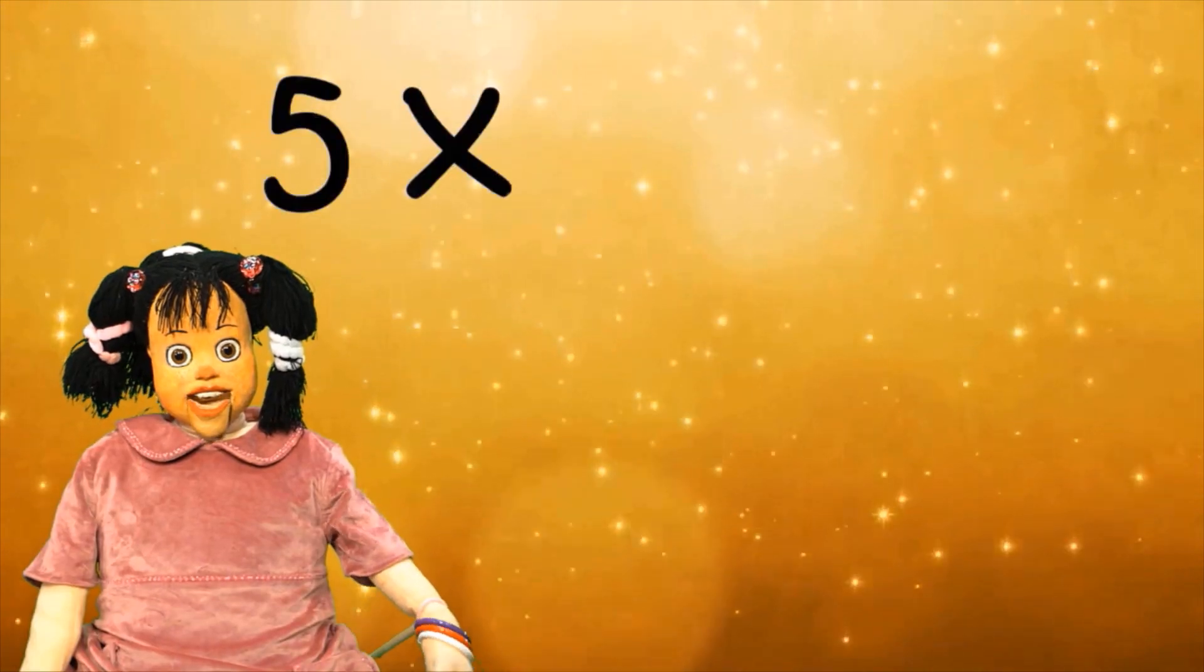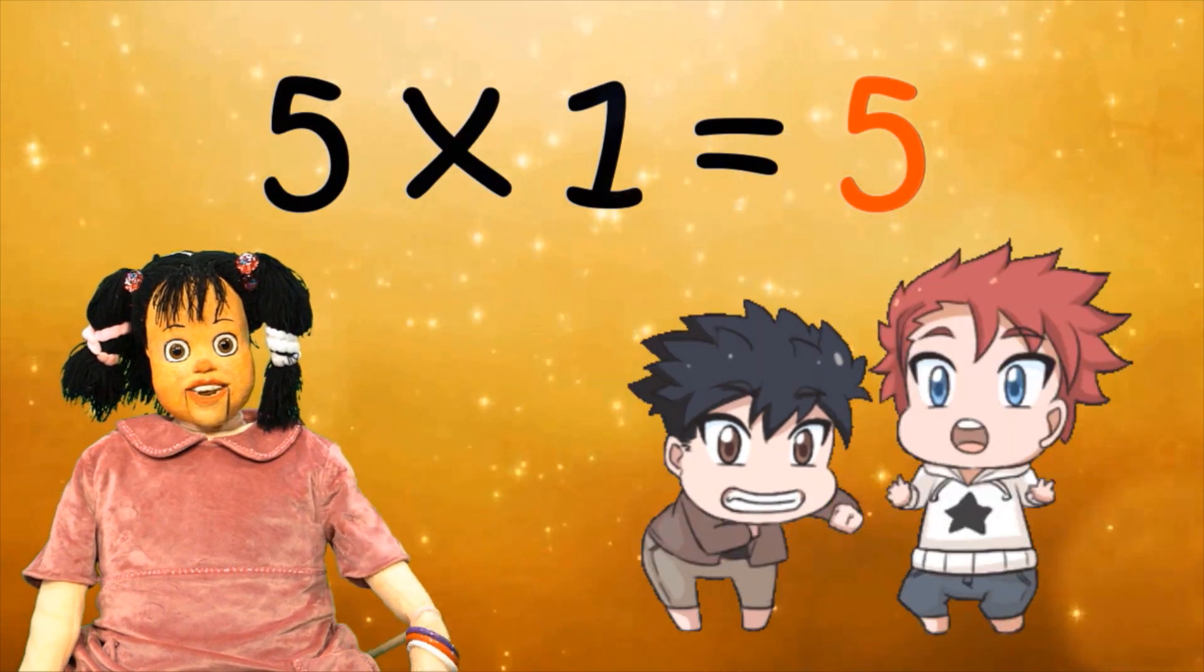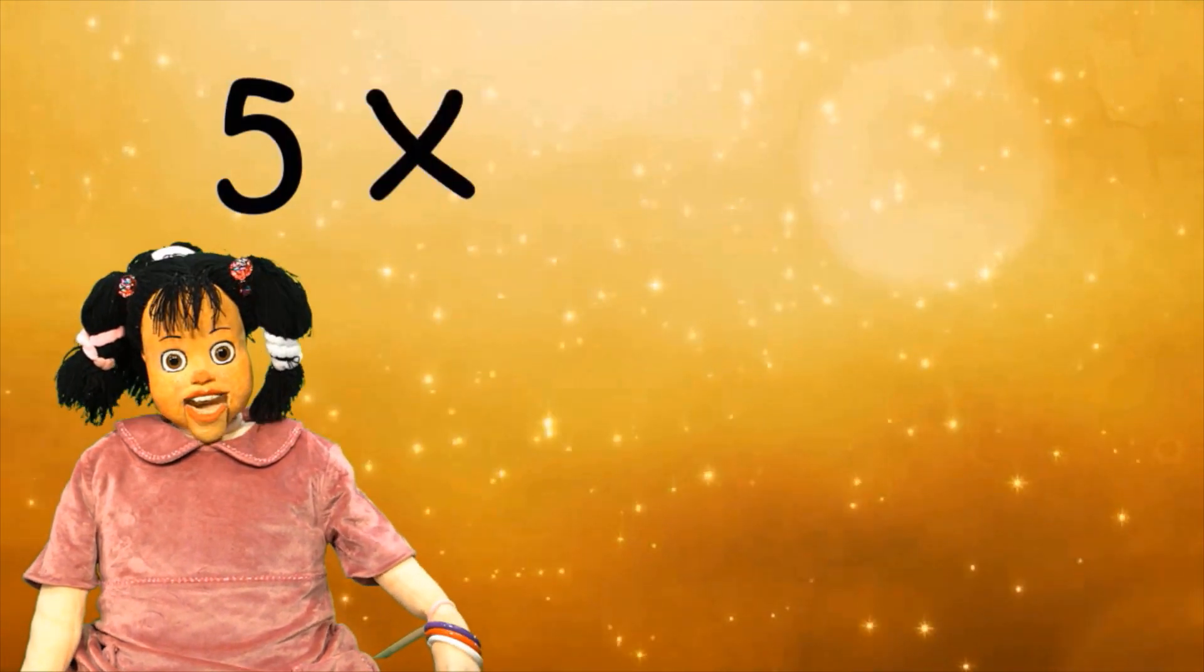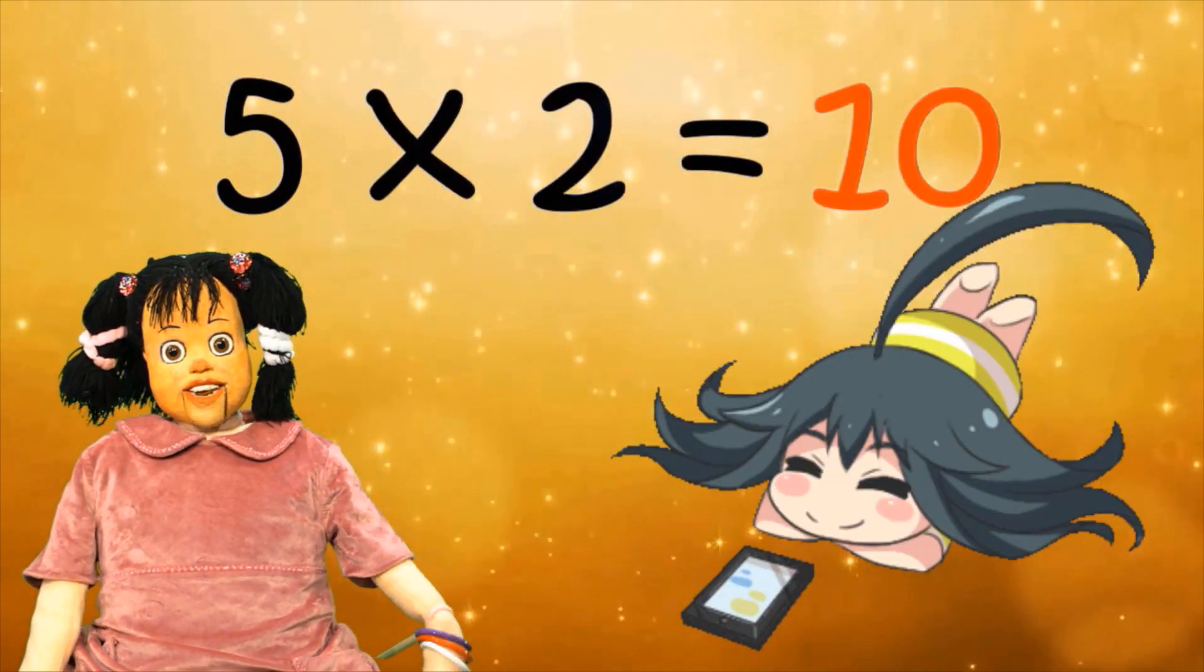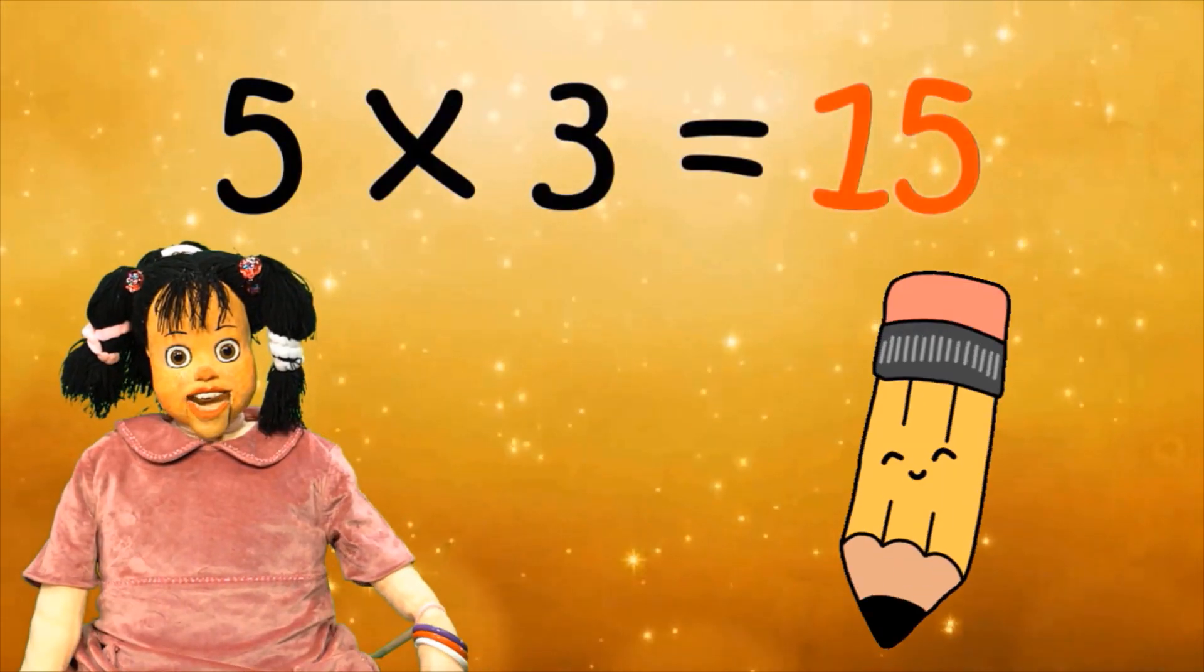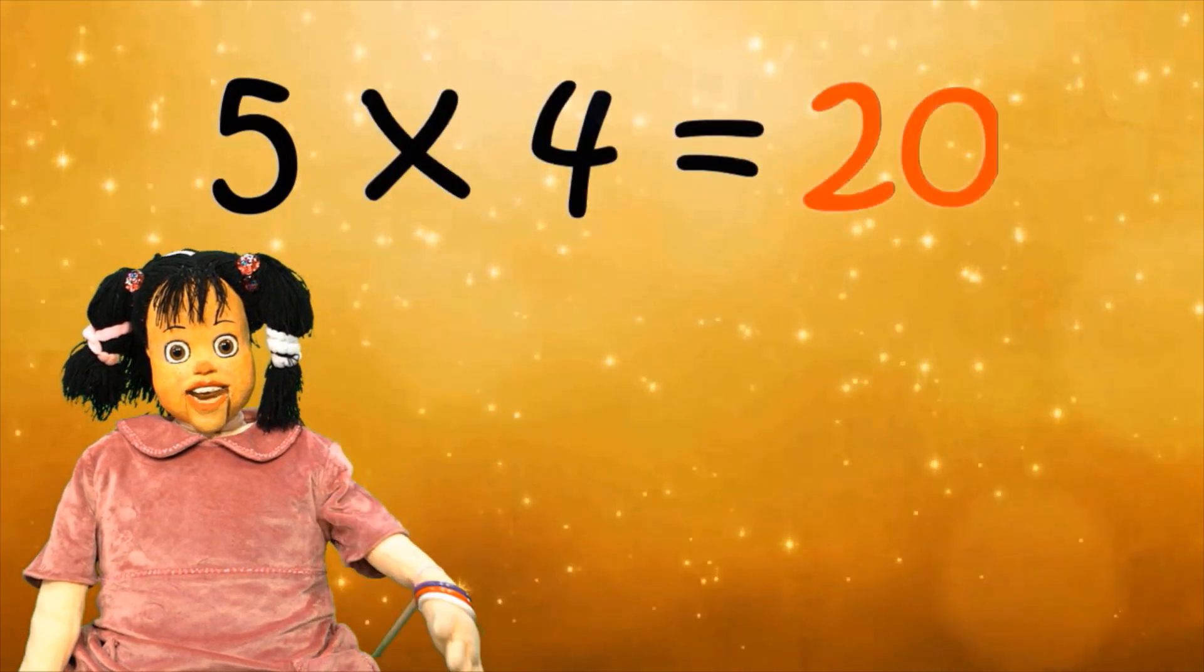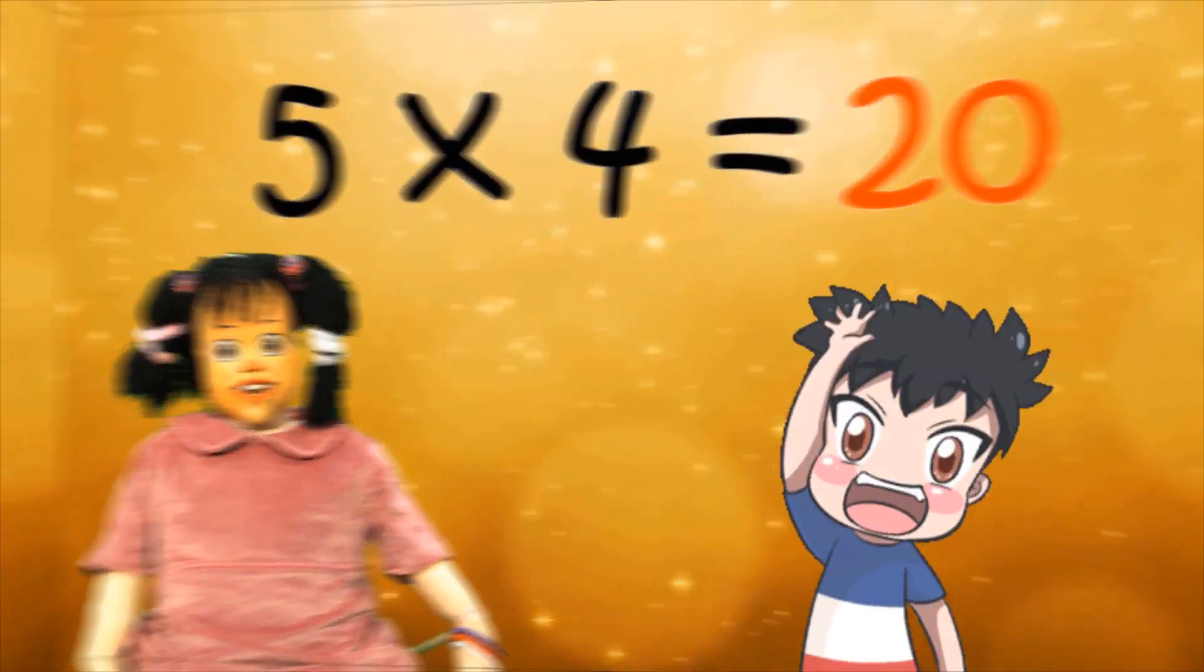5 times 1 equals 5, seç kendine. 5 times 2 equals 10, bu oyun bitti son. 5 times 3 equals 15, bu kalemler beleş. 5 times 4 equals 20, can geldi mi şimdi?